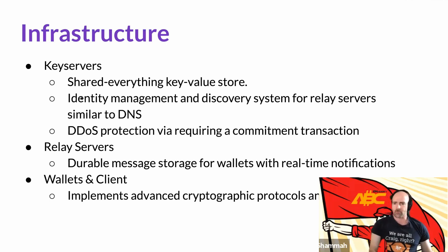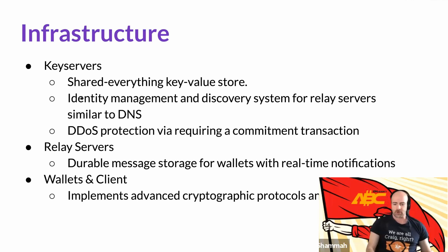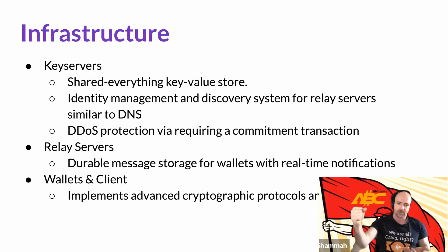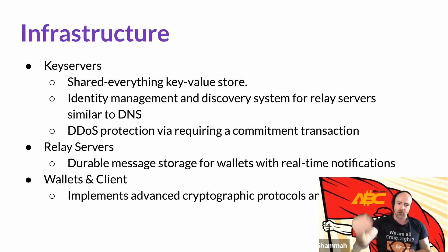The relay servers provide the mechanism for wallets to communicate with each other. Instead of directly advertising a wallet address, which would not work if you were offline and changes frequently, you advertise a relay server. The basic flow: your new friend goes to the key server, looks up your Bitcoin Cash address, finds your relay server, constructs a message and sends it to the relay server where you're known to look for messages. If you're offline, you can go and fetch that message later, or get a real-time notification through WebSocket.